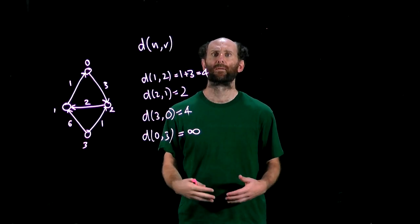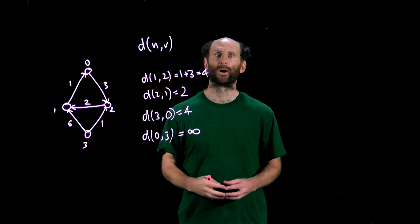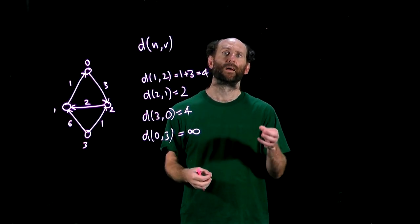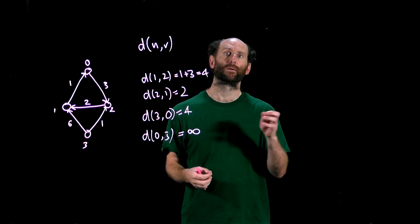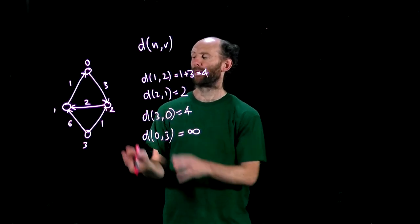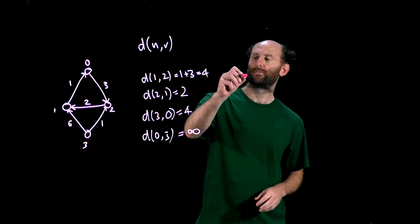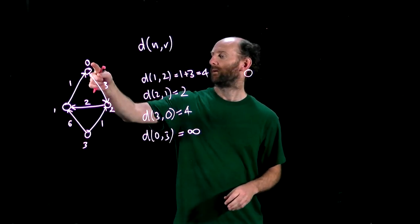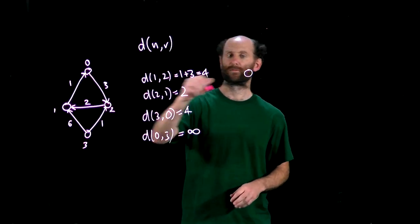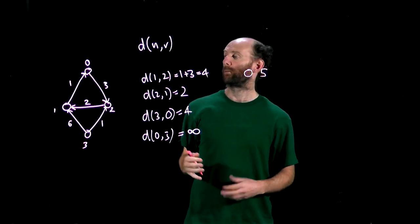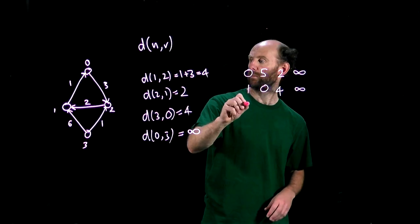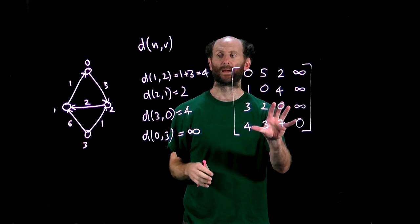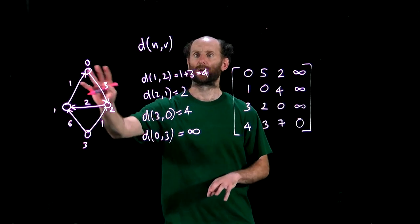It's often helpful to have the distance matrix for a digraph. That is a matrix where the ijth entry of the matrix is the distance from node i to node j. So for our example here we'll have distance from 0 to 0 is 0, distance from 0 to 1 is 5 and so on. So this is the distance matrix for this digraph here.